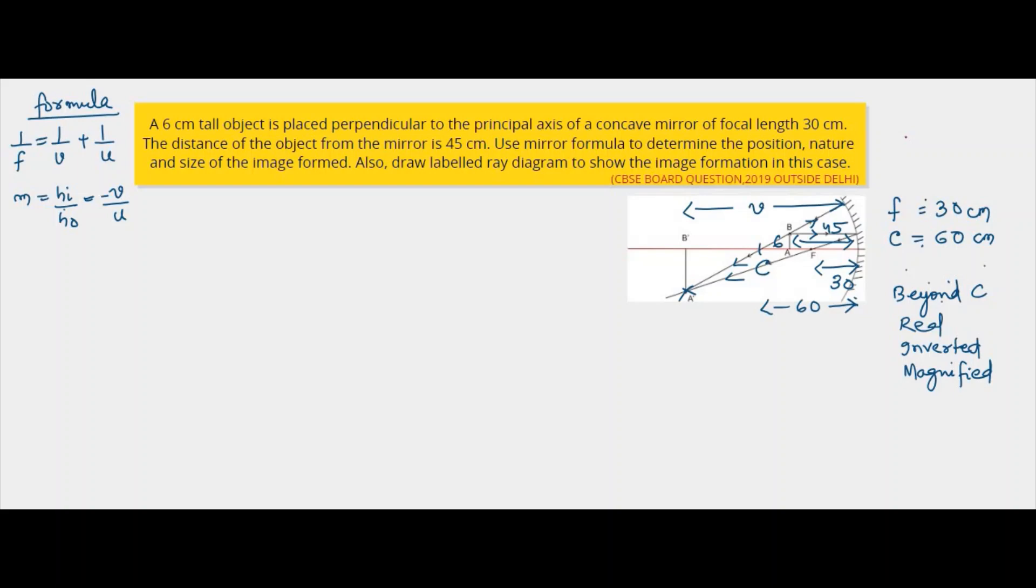Now we'll first write down what all are given. So the focal length is given, that is minus 30 centimeter, because to measure the focal length we have to go from the pole towards the left.